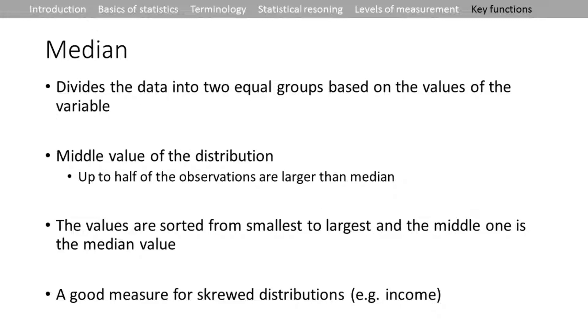For example, income is like this — there are fewer really high-income people and most people are at the lower end.